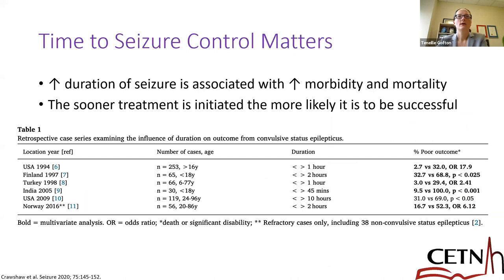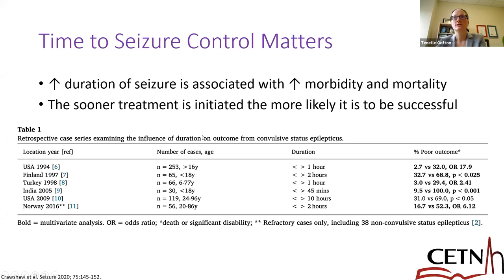Time to seizure control really does matter. Data from multiple studies worldwide looking at duration of status between the 40-45 minute and two-hour mark consistently showed a higher odds ratio for poor outcome when status lasts longer. So a longer duration of seizures leads to increased morbidity and mortality, and the sooner we can treat, the more likely it is to be successful.